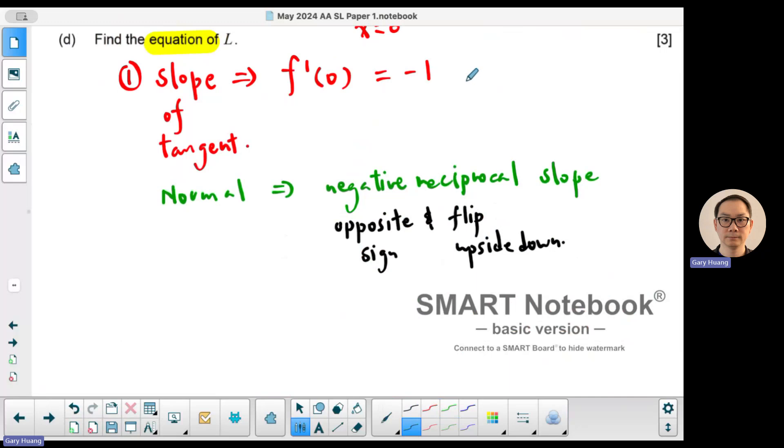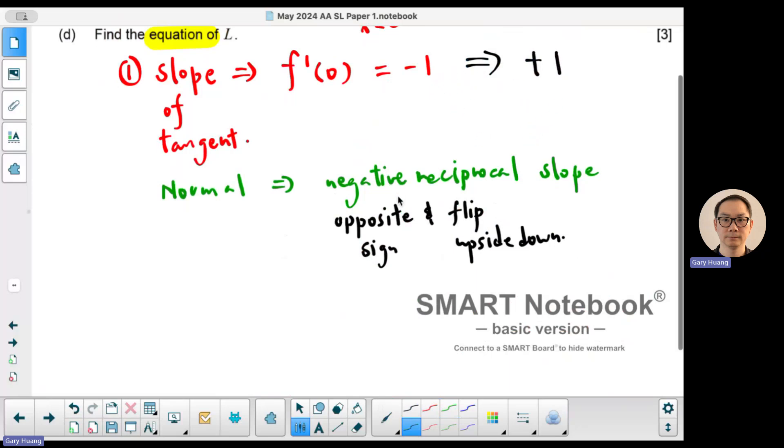So a -1 would become positive, opposite sign. And 1, when you flip 1/1, you're still going to get 1/1. So the slope of the normal is going to be positive 1.